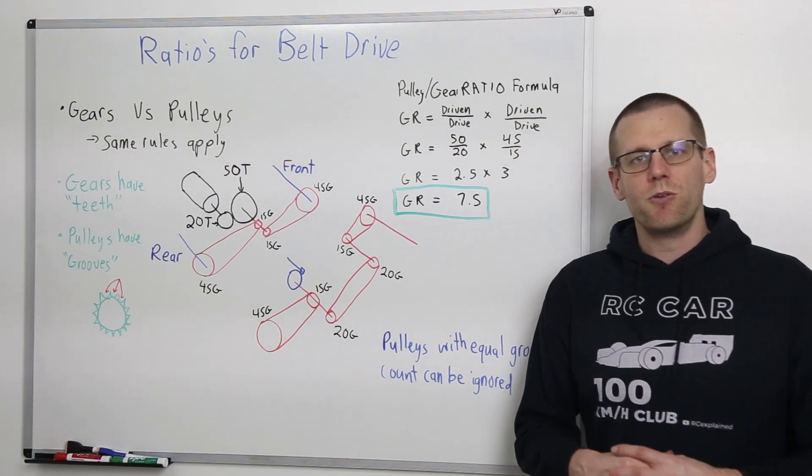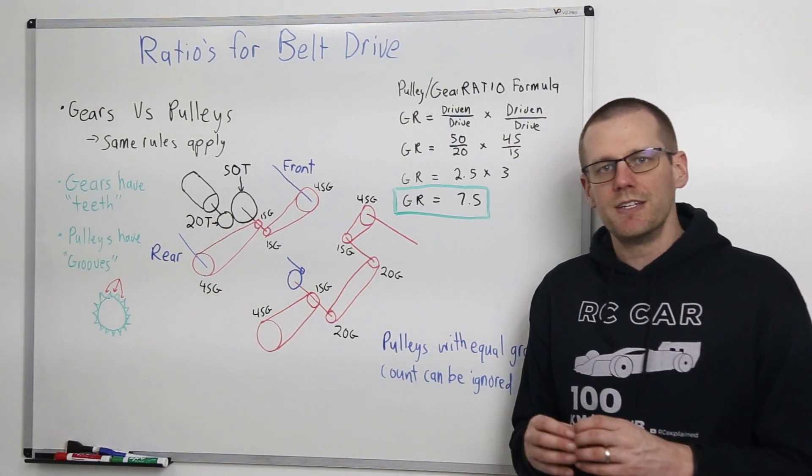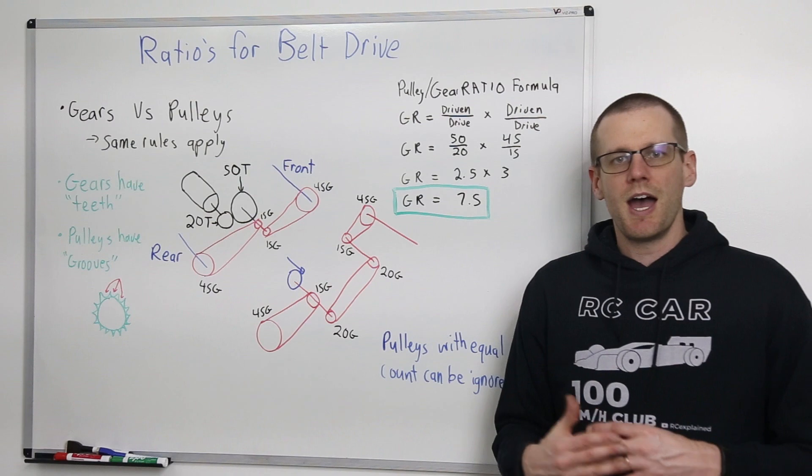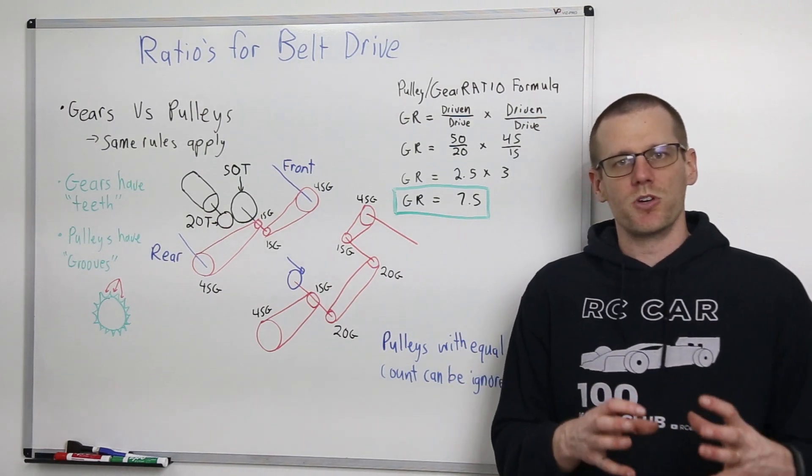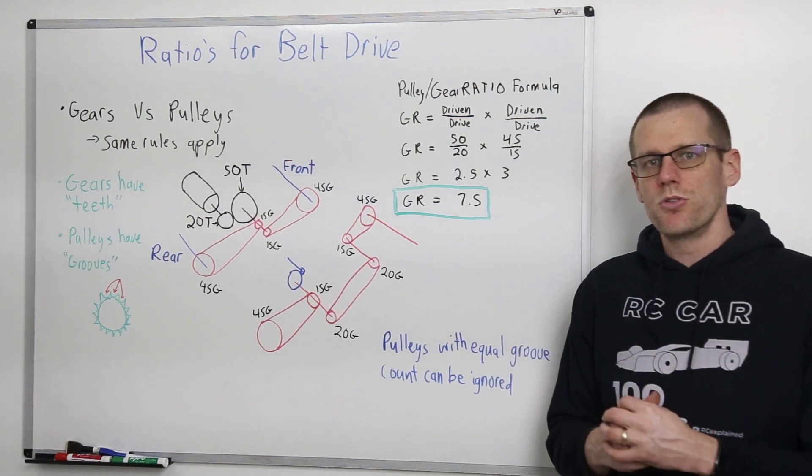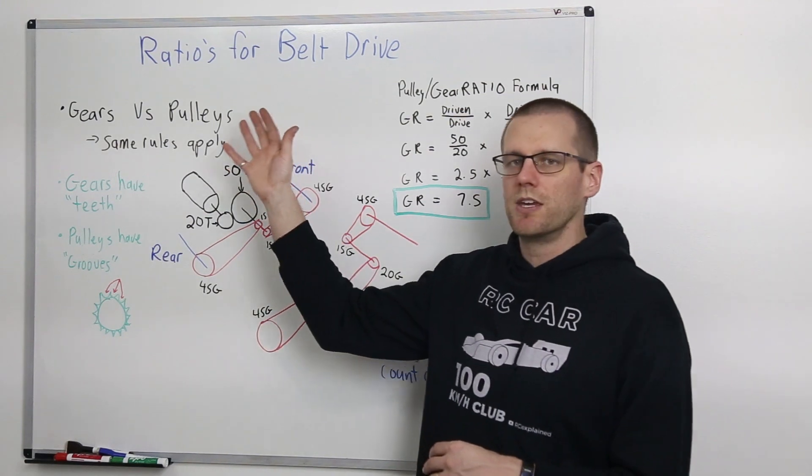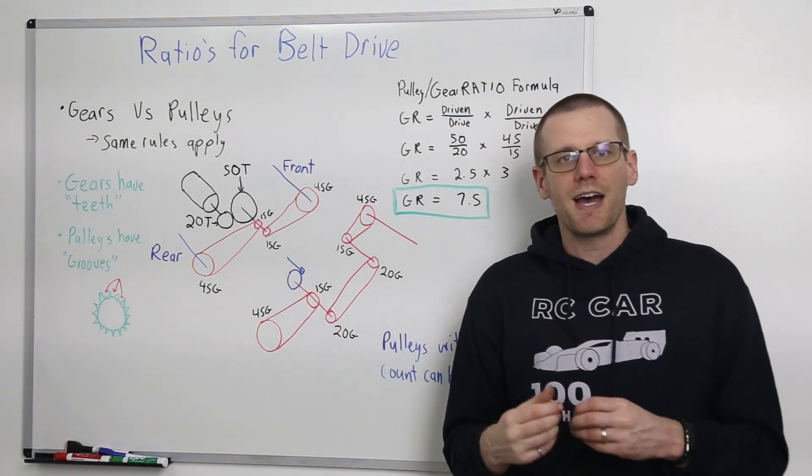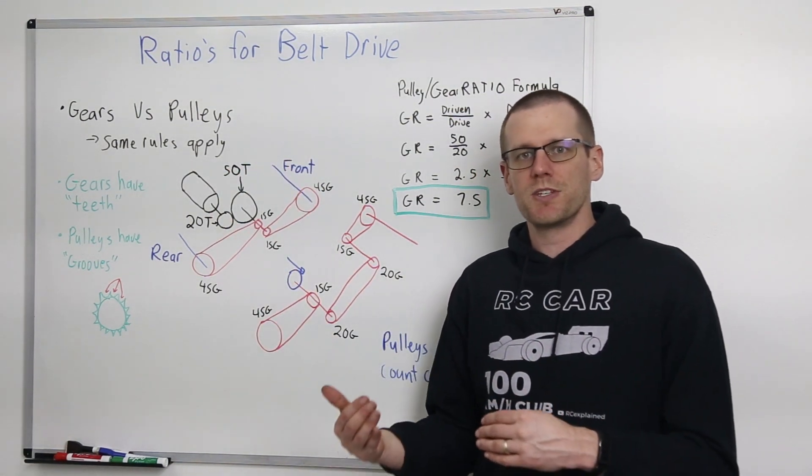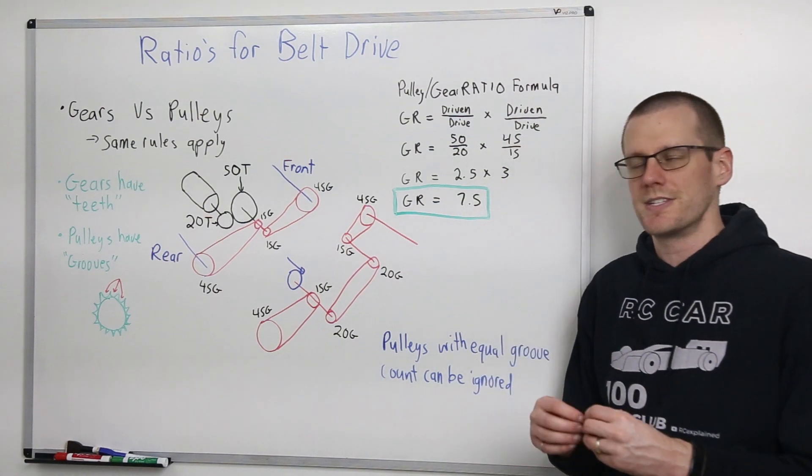This week we're going to be taking a look at ratios, more specifically dealing with pulley systems as you would find them in radio-controlled cars. We're going to go through the differences between gears and pulleys, how it actually applies, and how we name those types of systems, specifically the areas that we're interested in.